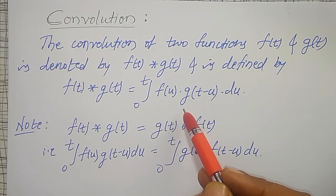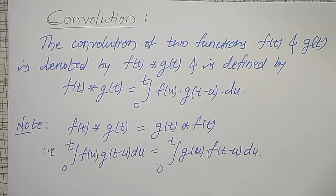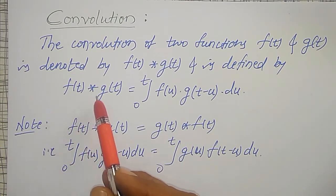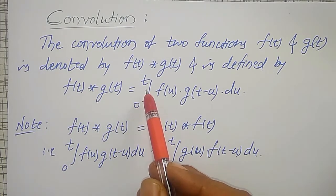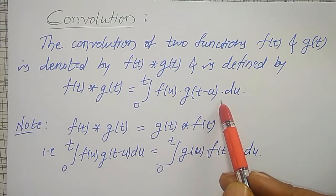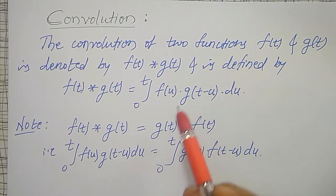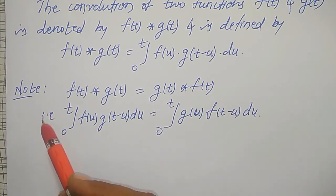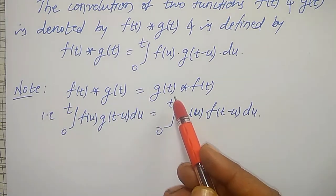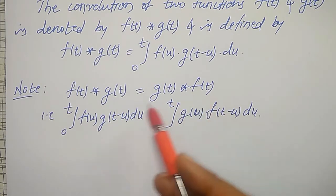Very important: this convolution holds good in almost all the transformations, integral transformations. Here, f of t convolution g of t is equal to integration from 0 to t of f of u into g of t minus u. Its commutative property also holds good. We can prove that, but I am skipping the proof here. f of t convolution g of t is also equal to g of t convolution f of t.